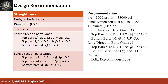Design recommendation: f'c equals 3,000 PSI, fy equals 33,000 PSI, panel dimension 20 feet by 20 feet, thickness 5.5 inches. Short direction bars of grade 33: top bars 5 feet at discontinuous edge, half-inch diameter at 7.5 inches on center; bottom bars half-inch diameter at 7.5 inches on center. Long direction bars of grade 33: top bars 5 feet at discontinuous edge, half-inch diameter at 7.5 inches on center; bottom bars half-inch diameter at 7.5 inches on center.